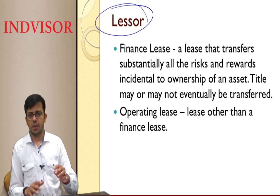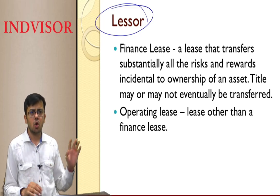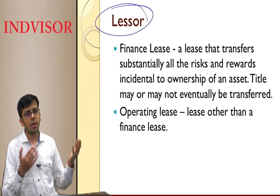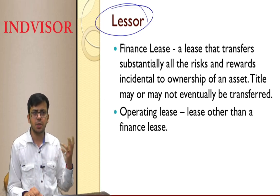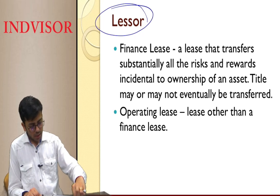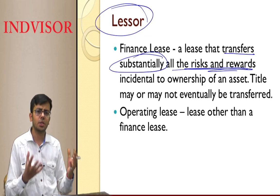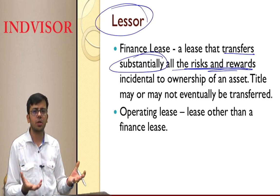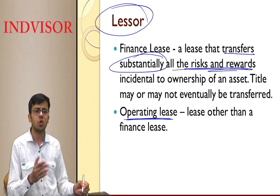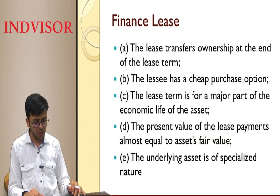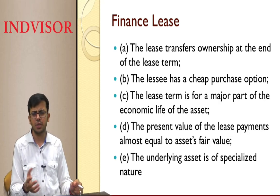Now moving to lessor accounting. For the lessee there is only one method, but for the lessor there are two: finance lease and operating lease. Operating lease means whatever rent you receive is shown as income. Finance lease is a special type of lease that transfers substantially all risks and rewards related to the asset to the lessee. The five key indicators of a finance lease are important from an exam point of view.